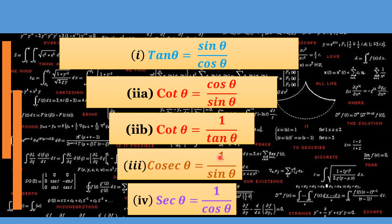Then we have cosec, which is given by 1 over sine, and sec, which is given by 1 over cosine. Note: many students confuse this, because cosec has the term 'cos' in it. Many tend to think cosec is 1 over cosine, but it is the opposite — cosec is 1 over sine, and sec is 1 over cosine.